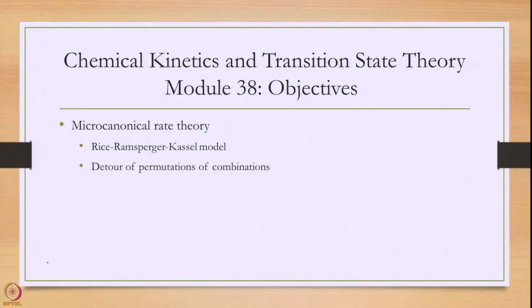Hello and welcome to module 38 of Chemical Kinetics in Transition State Theory. In the remaining modules we will switch gears and discuss the last leg of this course: calculating rate constants at constant energy. We will start today with a rather simple treatment done by three gentlemen — Rice, Ramsburger, and Kassel — in the 1920s.